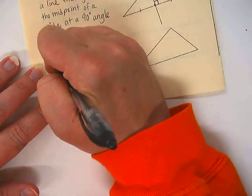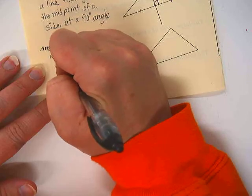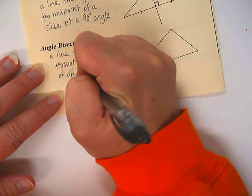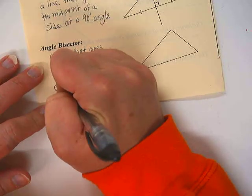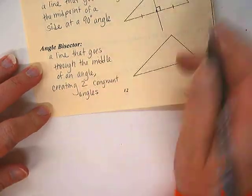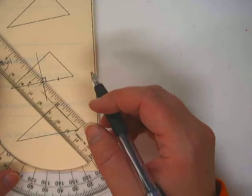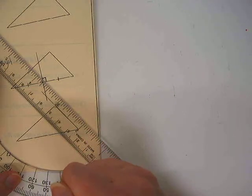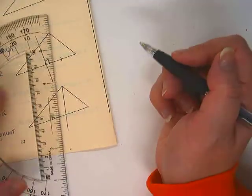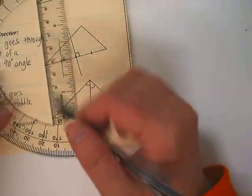The next one you should already know is called an angle bisector. An angle bisector is a line that goes through the middle of the angle, creating two congruent angles. If you wanted to do this officially, you would measure the angle and determine, oh, that's 90 degrees. So if I want to bisect that angle, that would be 45 degrees. So I can kind of line it up with 45 degrees here, and then I can connect that corner to there, and that should give me an angle bisector, so that is congruent to that.